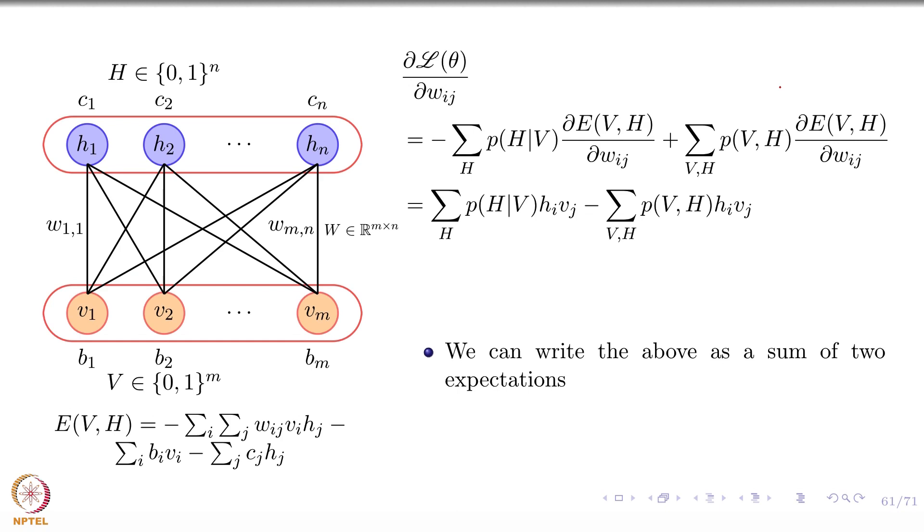You can actually write the above as a sum of two expectations. What are those expectations? What is the formula of expectation? Summation x P_x. What is x and what is P_x? H_i V_j and this is an expectation with respect to the distribution H given V. And what about this? Same expectation with respect to V comma H. So we can write this as a summation of two expectations.